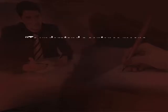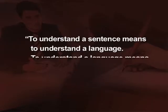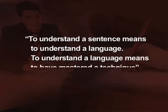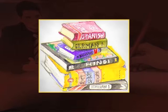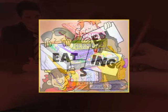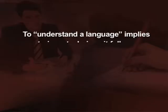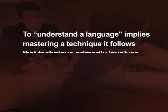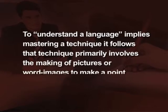Therefore, what Wittgenstein says in Philosophical Investigations is that to understand a sentence means to understand a language. To understand a language means to have mastered a technique. So language is about technique or what we call strategy, and not merely about constructing sentences in a correct manner. Once we accept that to understand a language implies mastering a technique, it follows that technique primarily involves the making of pictures or word images to make a point.